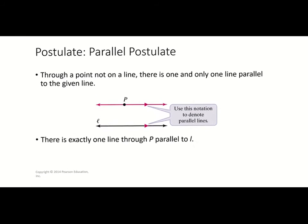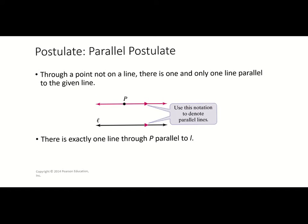The first one we're going to look at is our parallel postulate, and that says through a point not on a line — so if you have a point that isn't on the line, for instance here we have point P — there is one and only one line parallel to the given line. Through that point I can draw lots of lines that go through P and intersect with line L, but only one of those lines will be parallel to line L. So there is exactly one line through point P that can be parallel to line L.